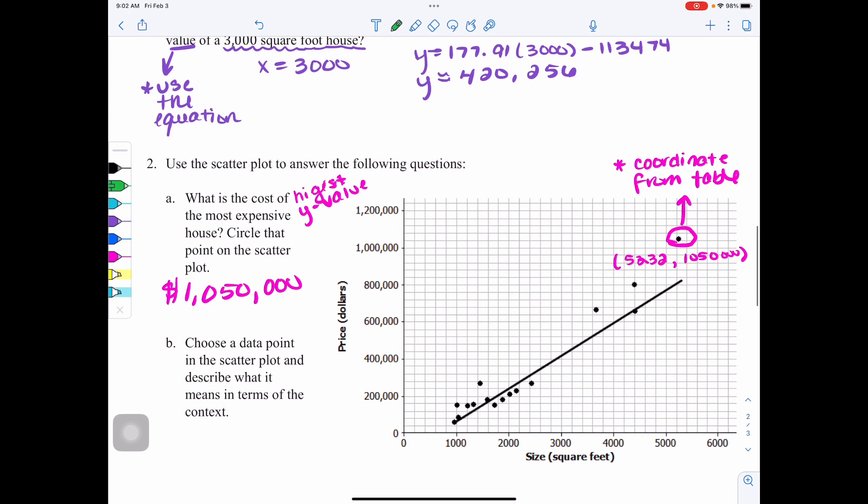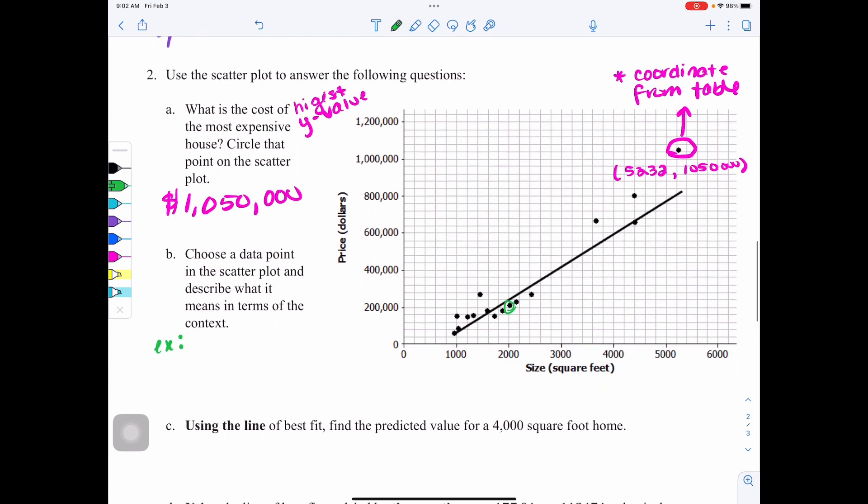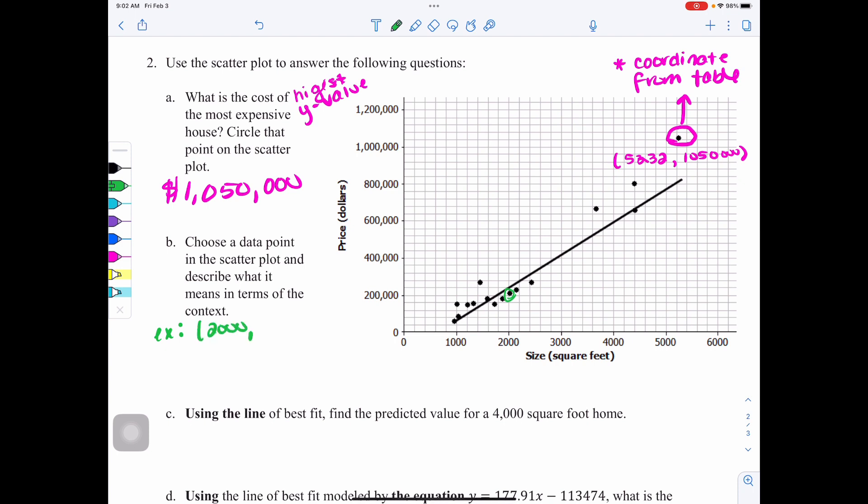Now the next one, they want us to choose a data point in the scatter plot and describe what it means. If I look, I chose this point. This is just an example. Obviously, there's lots of choices you could have. I have the point 2,000 and then 209,900. Again, if you weren't sure, you could go look at the table of values again to make sure you know the exact location. Now, what does this mean, though? Keeping in mind that this is X and this is Y, X is square footage. So that means a 2,000 square foot home. The Y value is a price, right? So I'm going to say costs $209,900. That's what an actual data point represents on the scatter plot, the square footage and the price for that square footage.